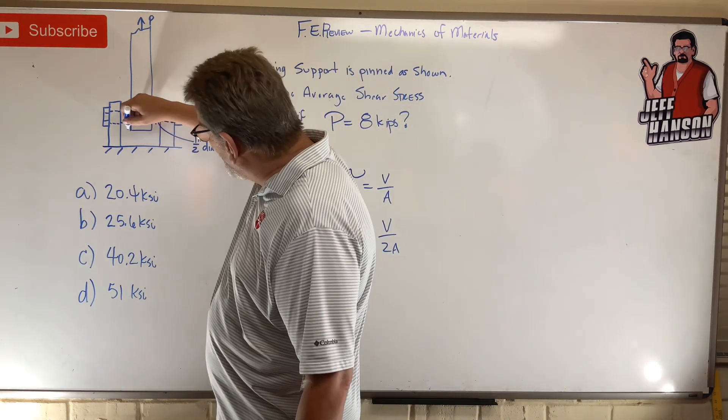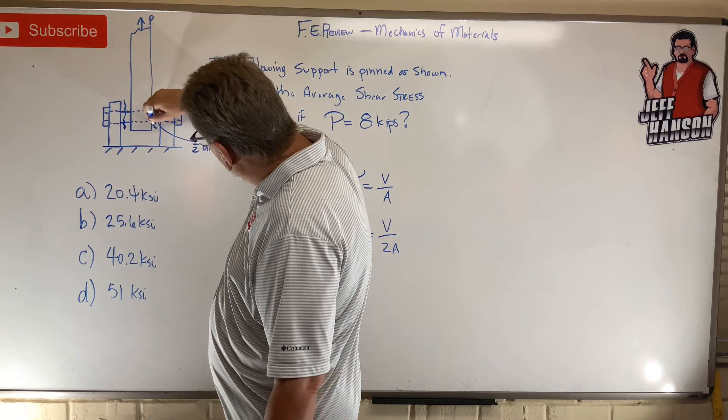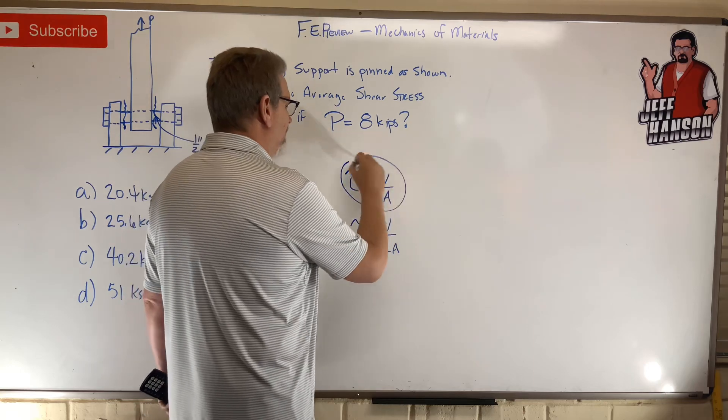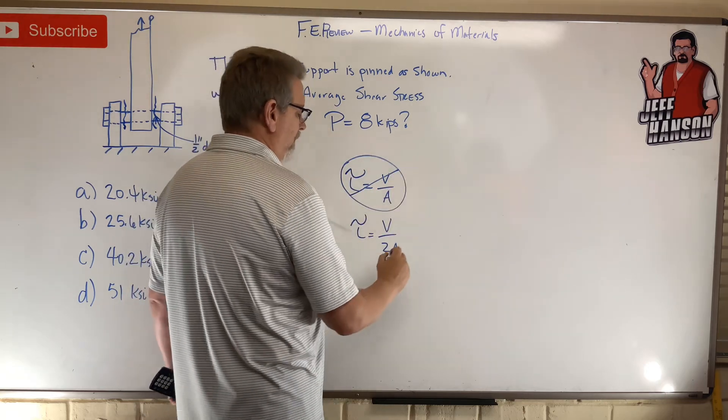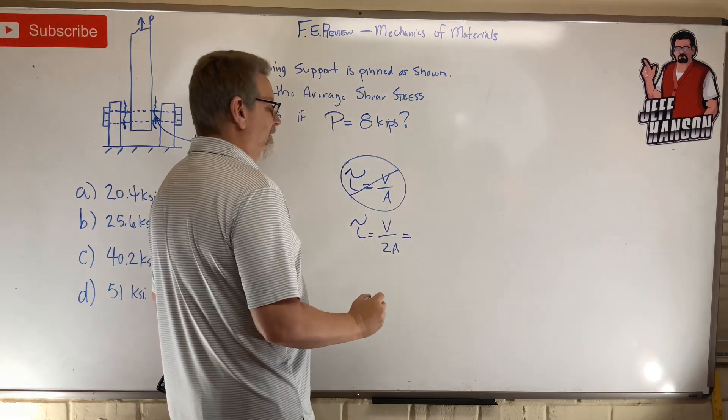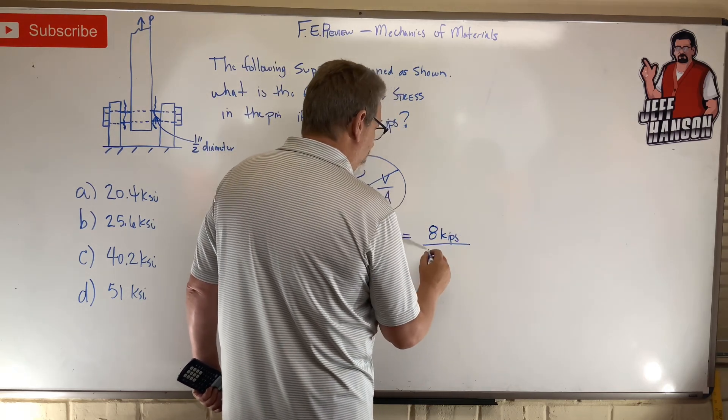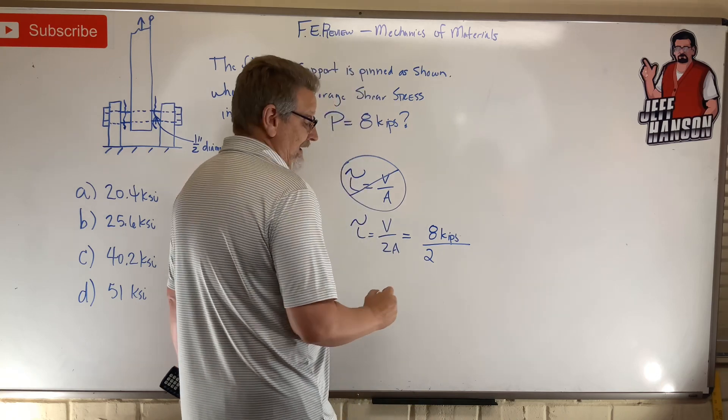I got to tear it through there and I got to tear it through there. This is a double shear problem. So this one right here? No. This one right here? Yes. Okay, 8 kips divided by 2A, which is...